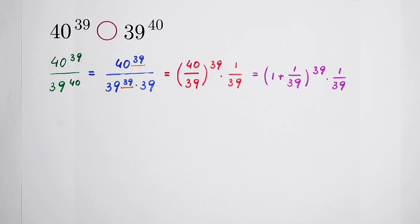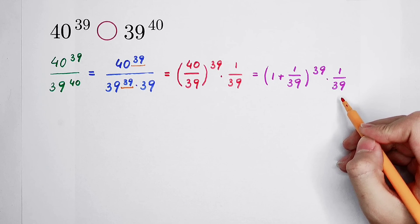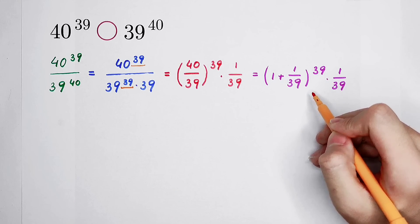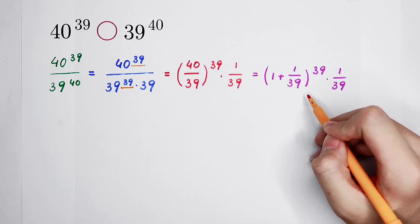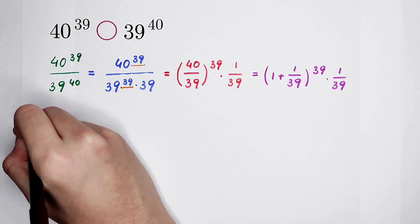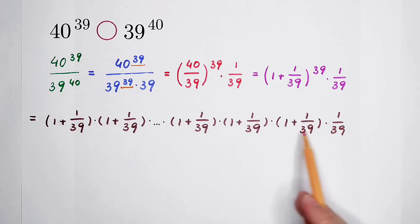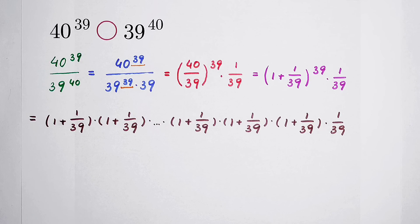It is much more complicated than the original fraction. Don't be upset — take a look at what we have. This 1 over 39 part is simple and easy, so we don't have to worry about it. We only have to consider this term: the base is 1 plus 1 over 39, and the exponent is 39. For dealing with this kind of expression, we have a common method — we can change the denominators in each bracket.